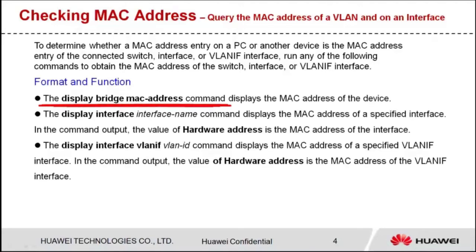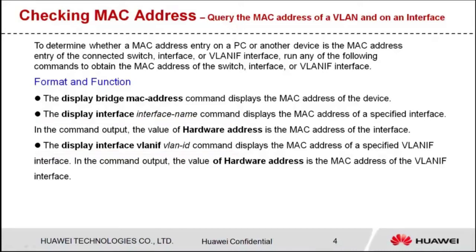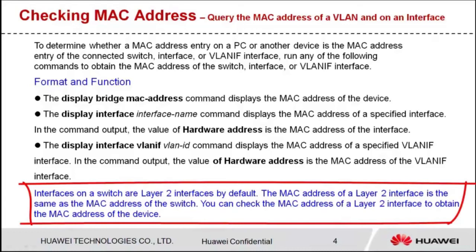The display bridge MAC-address command displays the MAC address of the device. The display interface command, with an interface or a VLAN interface specified, displays the MAC address of the interface or VLAN interface. In the command output, the value of hardware address is the MAC address of the interface or VLAN interface. Interfaces on a switch are layer 2 interfaces by default. The MAC address of a layer 2 interface is the same as the MAC address of the switch, so you can check the MAC address of a layer 2 interface to obtain the MAC address of the device.